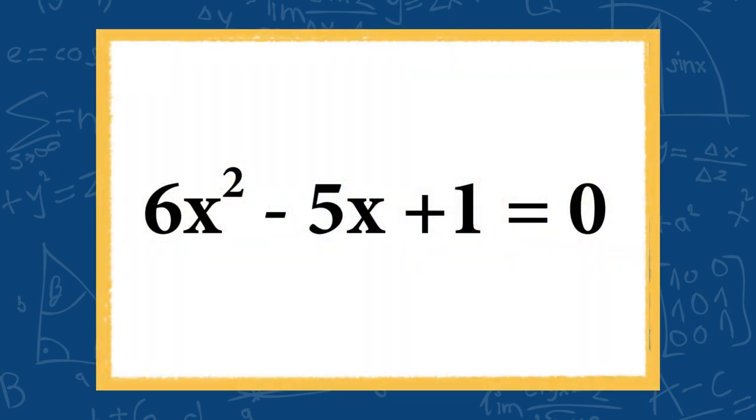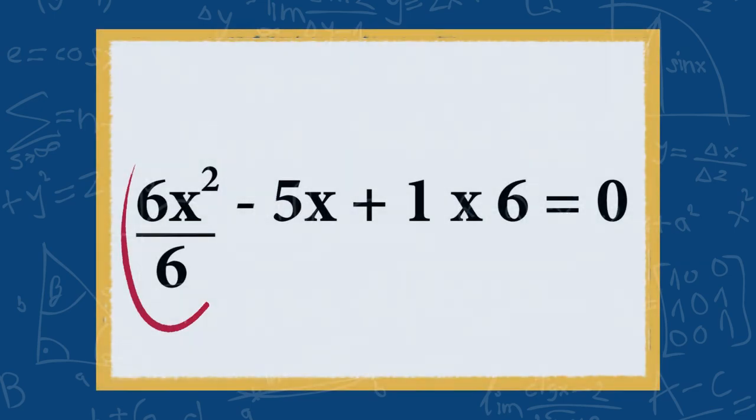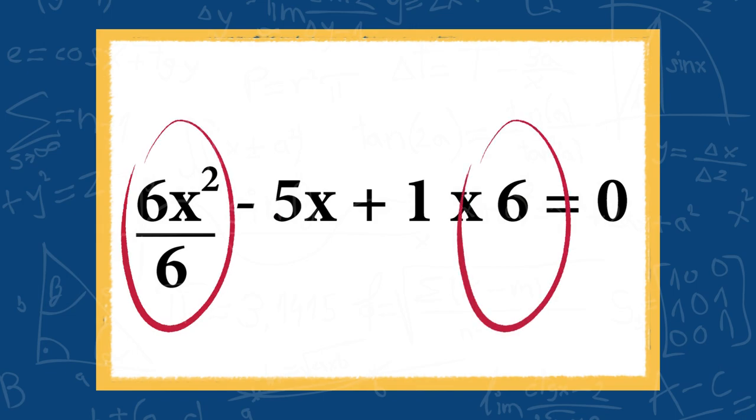He showed me this question. He divided the coefficient of x-squared by 6 to create a monic quadratic and multiplied the 6 onto the constant term.